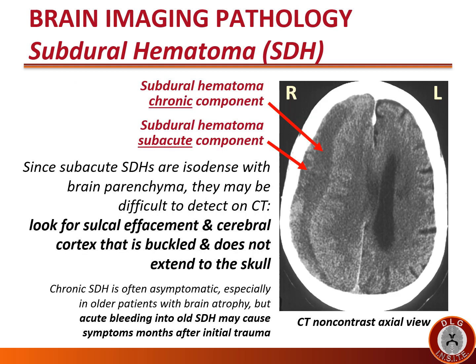This CT without contrast is from a patient with two right subdural hematomas at different periods. The chronic component is darker and hypodense, adjacent to the cerebral cortex. The subacute component is more isodense and closer to the bone, lateral to the old chronic hematoma. Since subacute subdural hematomas are isodense with brain parenchyma, they may be difficult to detect on CT — look for sulcal effacement and a buckled cerebral cortex that does not extend to the skull. Chronic subdural hematomas are often asymptomatic, especially in older patients with brain atrophy, but acute bleeding into an old subdural hematoma may cause symptoms months after initial trauma.